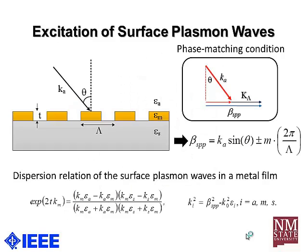Here is some background information about how to excite the surface plasmon wave. In order to launch a surface plasmon wave, we need to provide additional momentum to the incident wave. In this vector diagram, Ka represents the wave vector of the incident wave. In order to launch the surface plasmon wave, which has a propagation constant of beta SPP, we use the periodicity of this nanostructure, providing an additional grating vector to the incident wave to excite the surface plasmon wave. For sensor design, we solve the dispersion relation of the surface plasmon wave in a thin metal film. By numerically solving this dispersion relation, we can obtain the value of beta SPP.